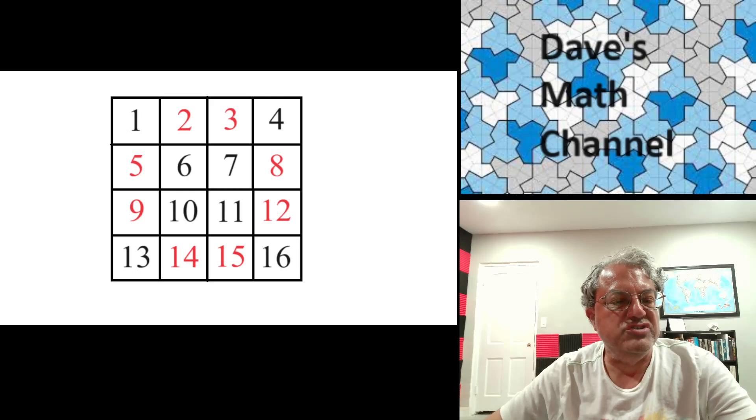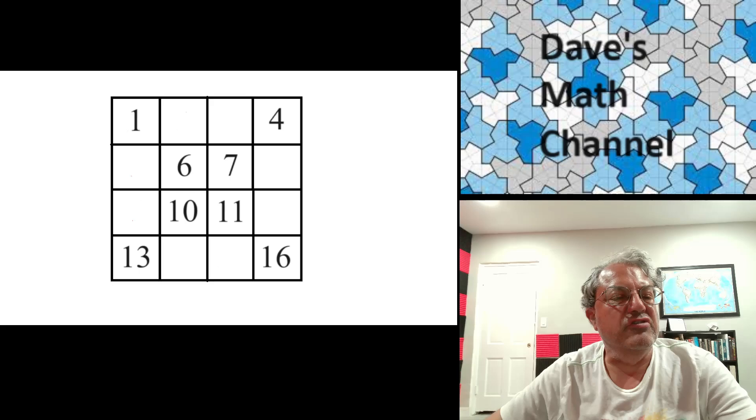Notice that I've marked the ones that aren't along the main diagonals in red, because I'm going to erase those. The numbers along the middle of the edges are all in red. Now they're gone.